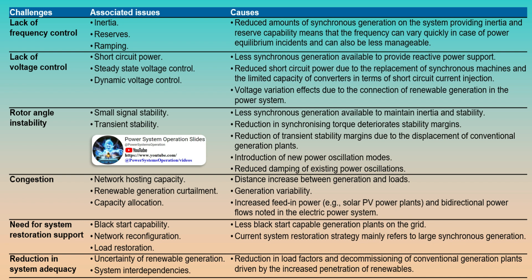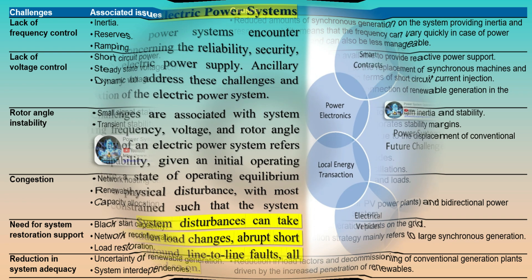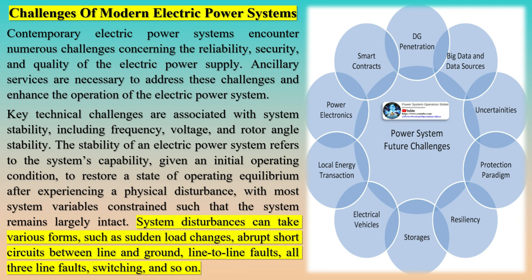The regulatory environment plays a significant role in determining how different systems acquire ancillary services. Vertically integrated utilities employ administrative tools like contracts, requests for proposals, and internal acquisitions to secure the necessary ancillary services for balancing supply and demand and ensuring grid reliability. In partially or fully restructured power systems, electricity generators with the technical ability to provide ancillary services can participate in competitive markets. In certain scenarios, ancillary services such as frequency and inertial response can be guaranteed through interconnection requirements instead of contractual or market mechanisms.